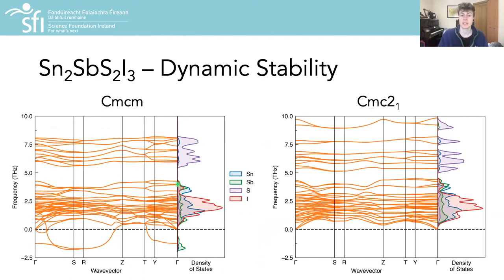After establishing Cmc2₁ as the energetically favored polymorph under static conditions, we computed the phonon dispersions of both structures to query their dynamic or structural stability. The negative frequencies in the phonon dispersions, such as these here, correspond to imaginary phonon modes which indicate the presence of nearby energy-lowering distortions along certain structural paths.